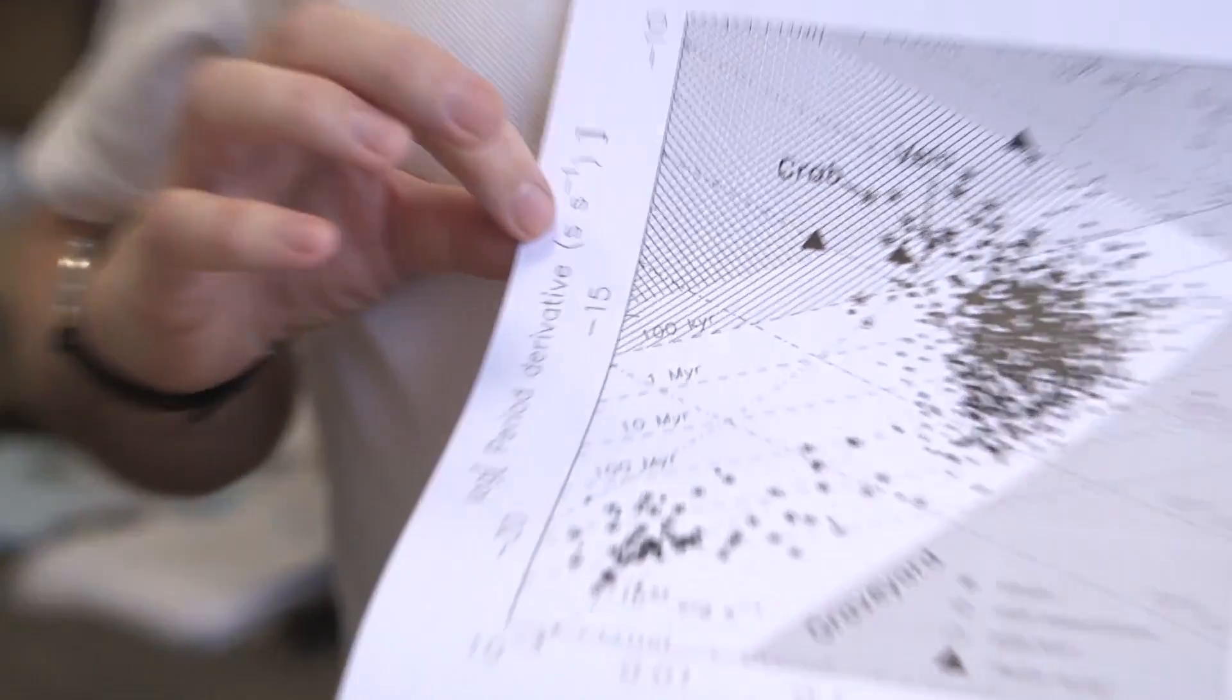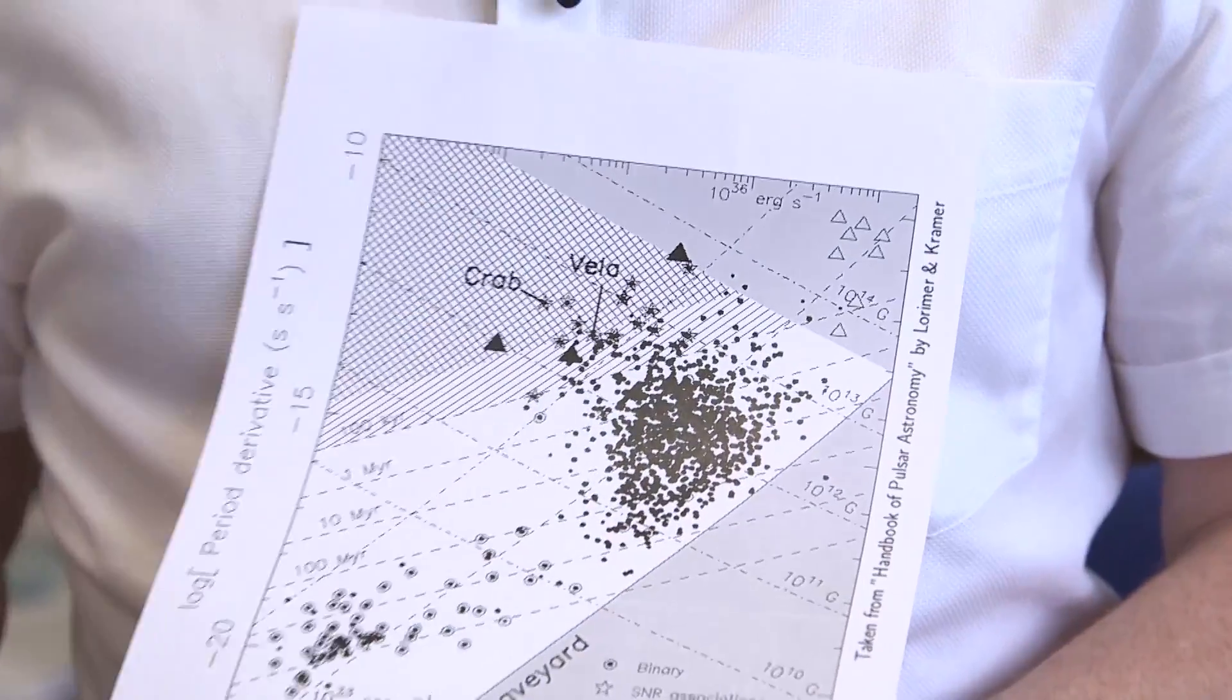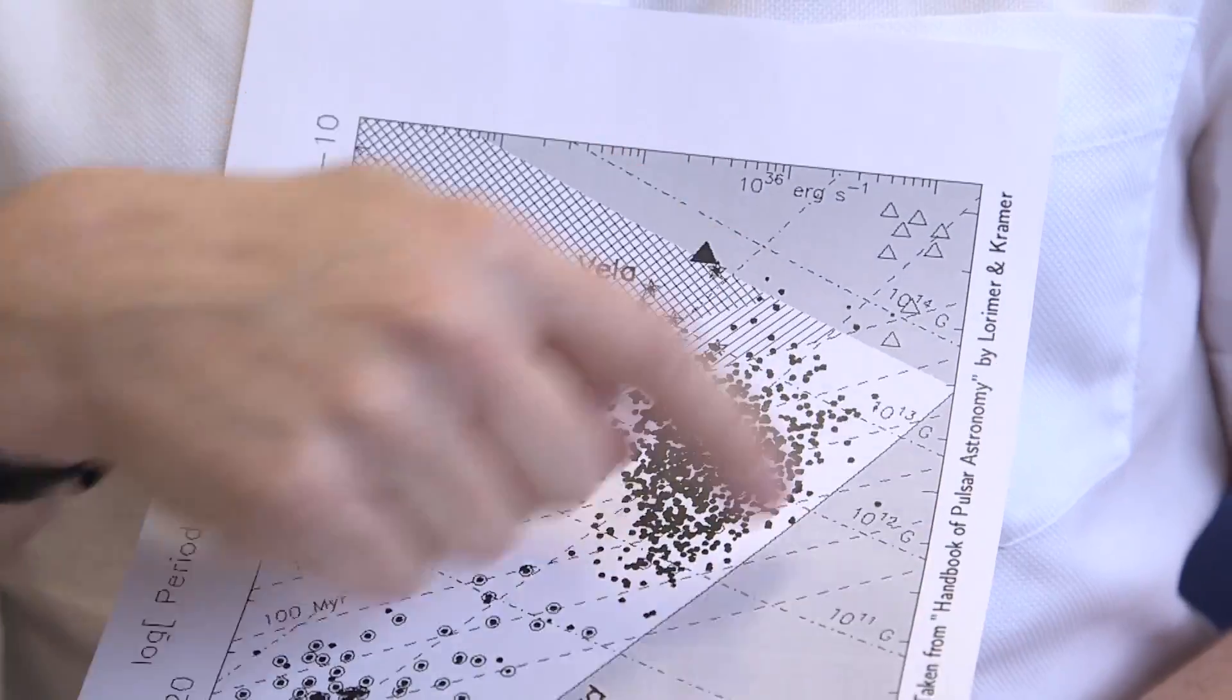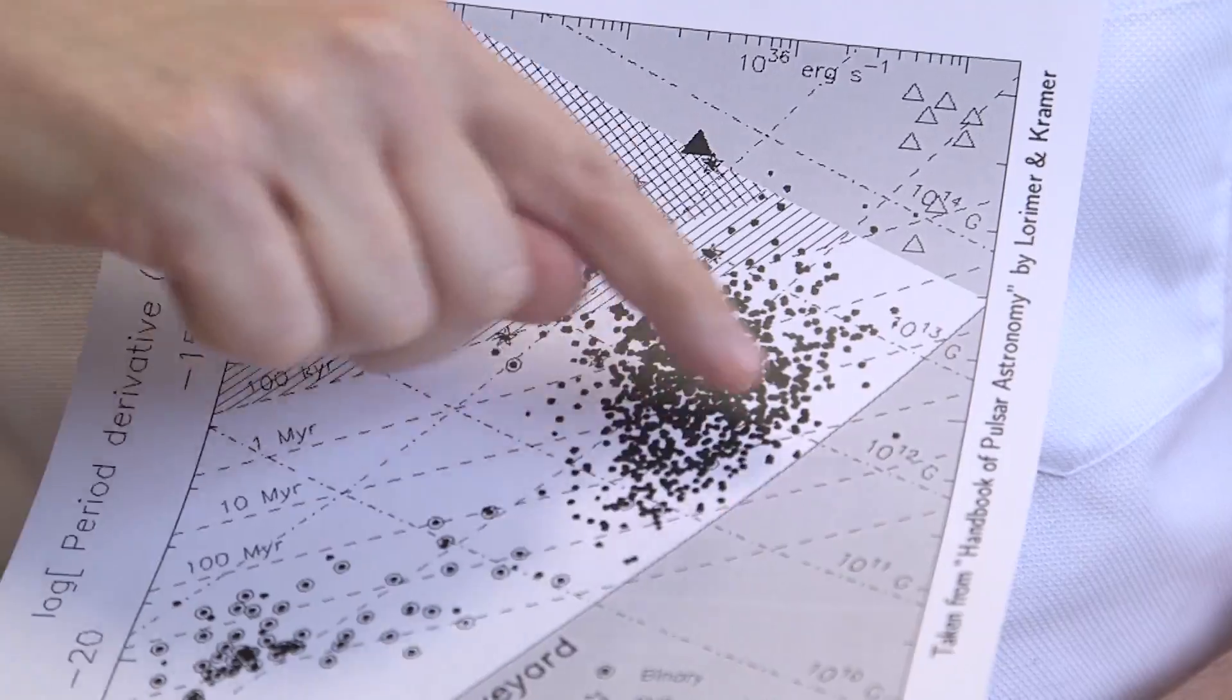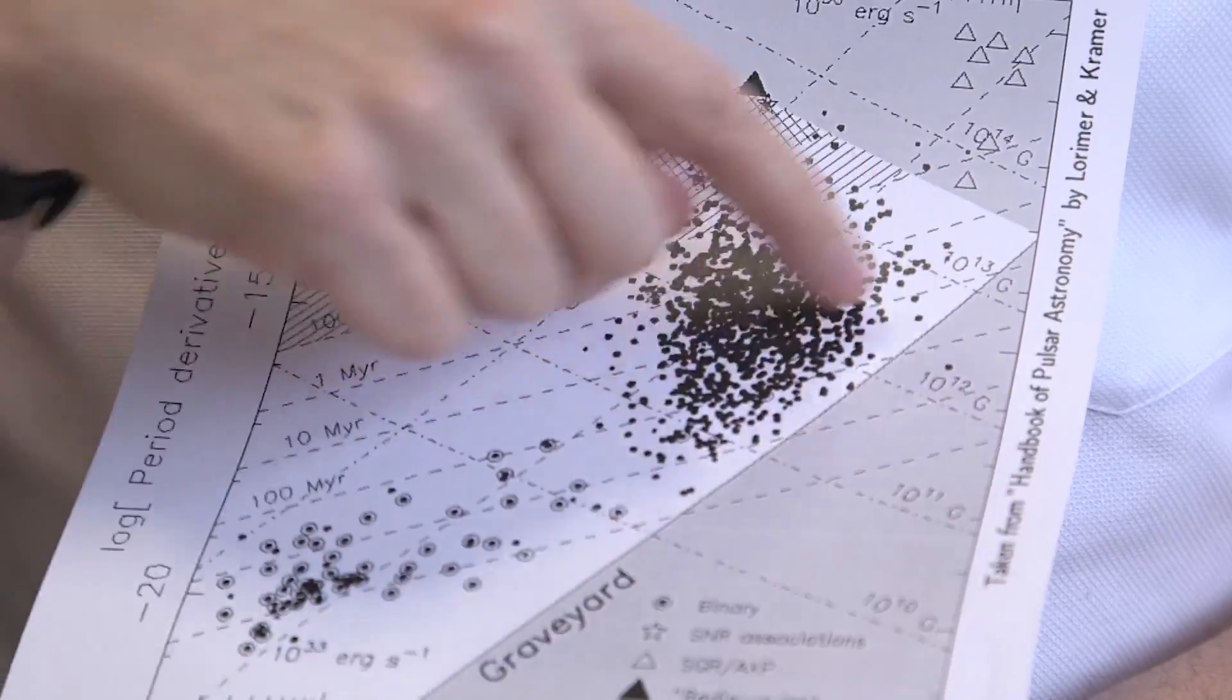And the units of those are seconds per second. So most pulsars that we know about in the Milky Way sit in this kind of cloud here. And when they get older, most pulsars kind of go towards this cloud. And then we can't detect them. This is the graveyard where they end up.